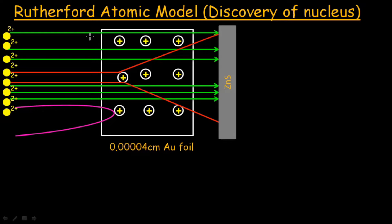Now let's talk about the discovery of the nucleus. Prominent work was done by Rutherford. He used helium nuclei or alpha particles and targeted them on the 0.00004 cm gold foil.